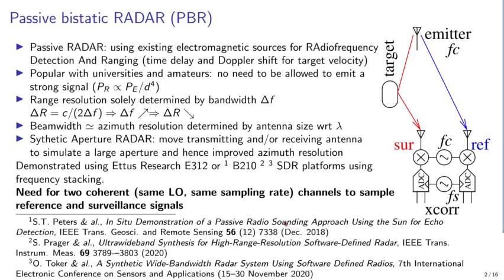Even the Sun has been used for passive bi-static radar, demonstrated using software-defined radio receivers like the E312 and B210. The lowest-grade receivers such as the RTL-SDR will not be usable because you need two coherent channels with the same local oscillator clocking the ADC and performing frequency transposition from RF to baseband.